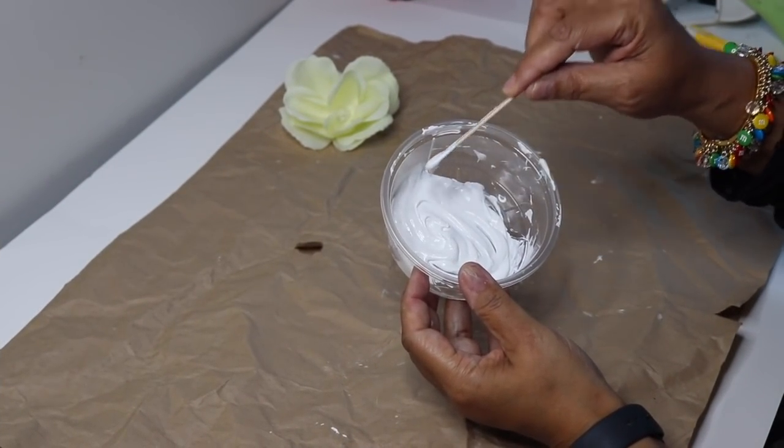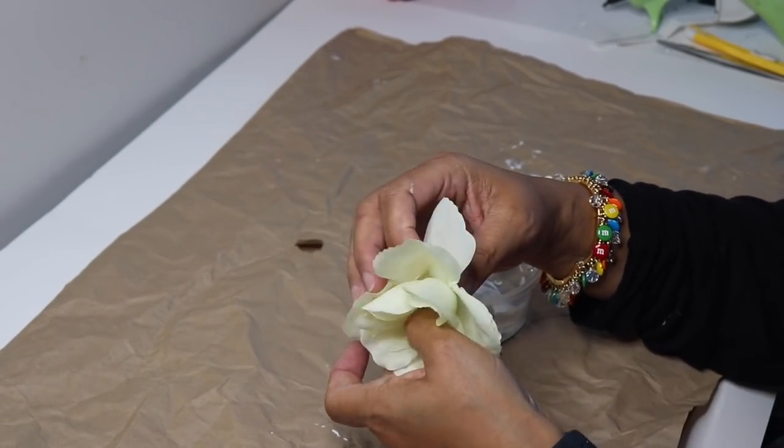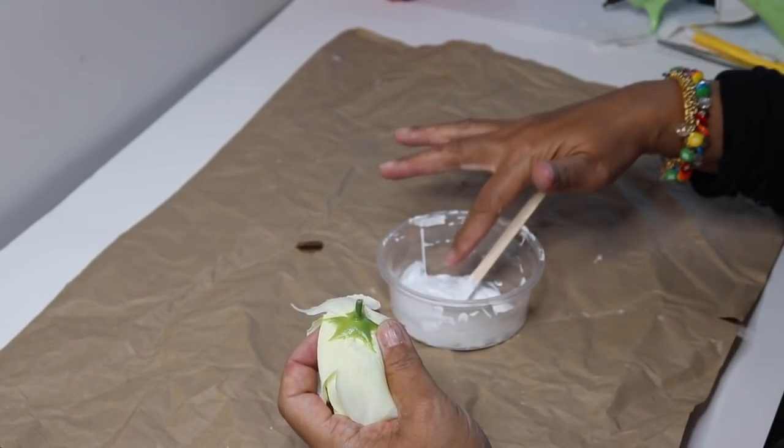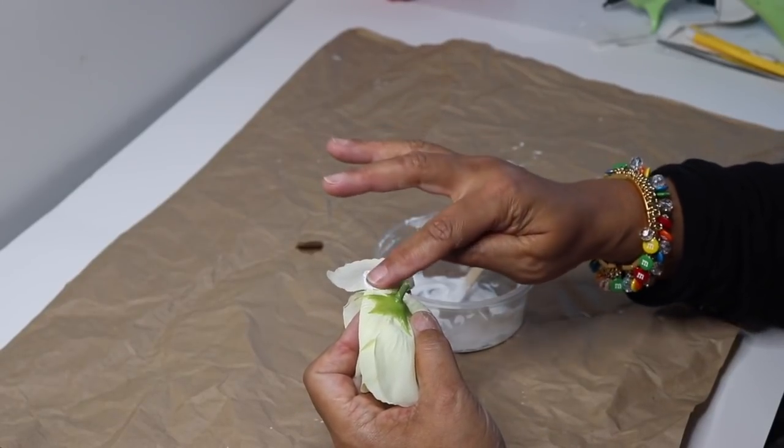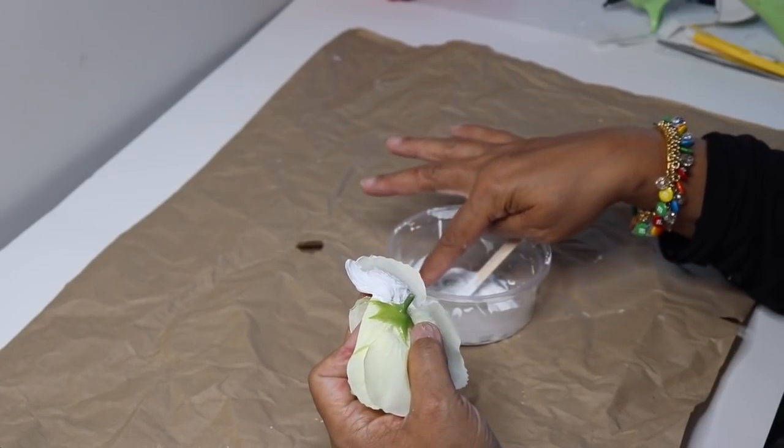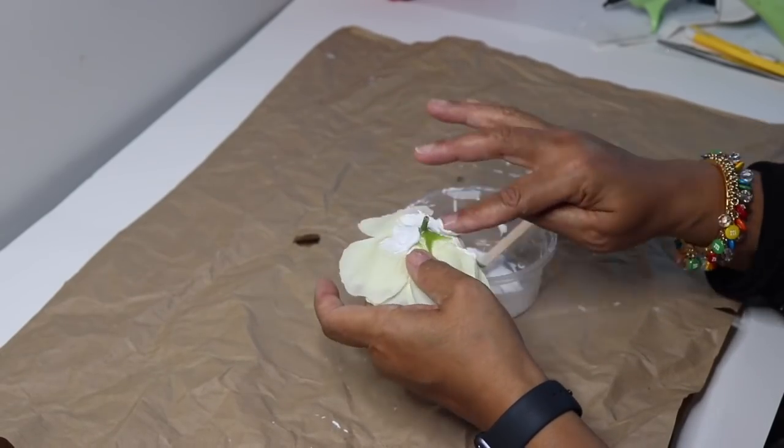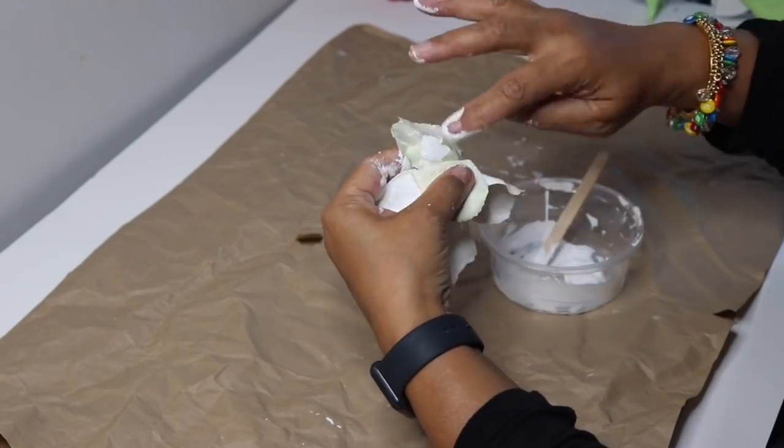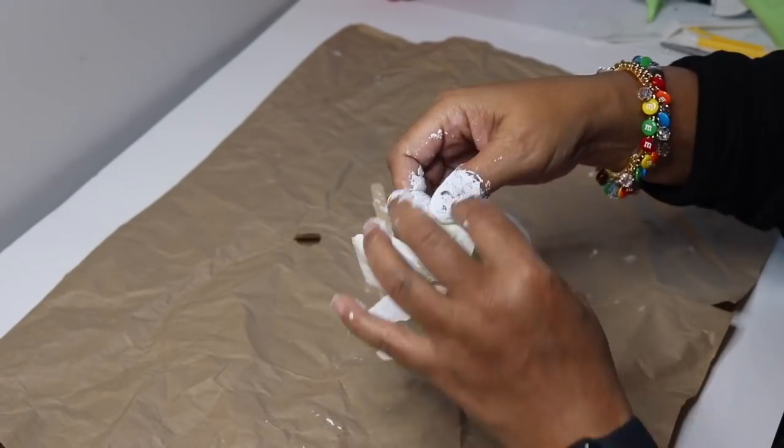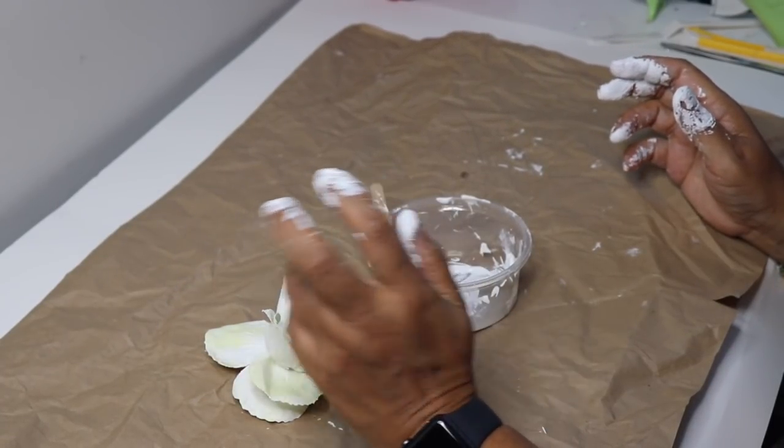Ahead of time I prepared some more of the caulk and acrylic paint mixture. I'm going to use my fingers to apply the mixture onto my petals, starting on the back of these petals. You can use a paint brush to do this as well and I'll show you how to do that later in the DIY. I started with the bottom row of petals and I'm going to work my way to the top. I separated the petals, I'll let this dry and I'll also do this to the next two roses as well.